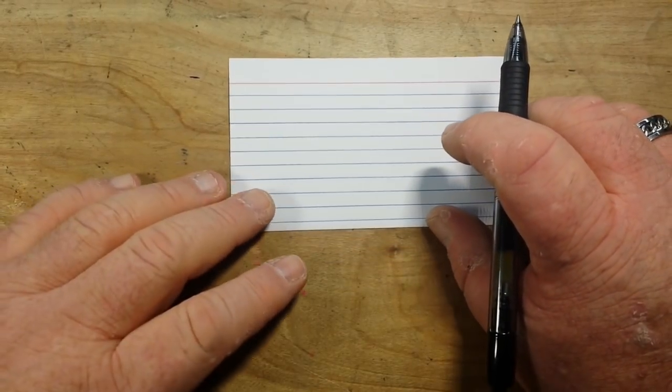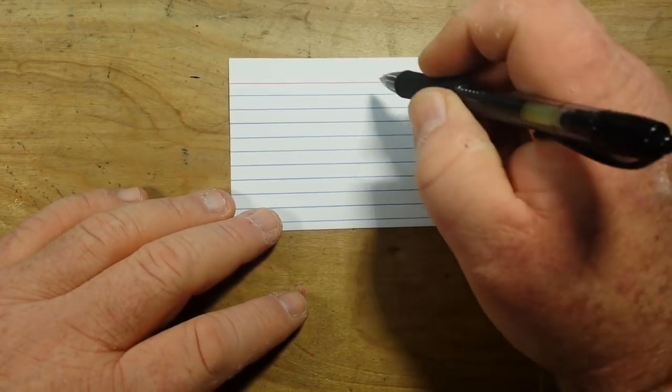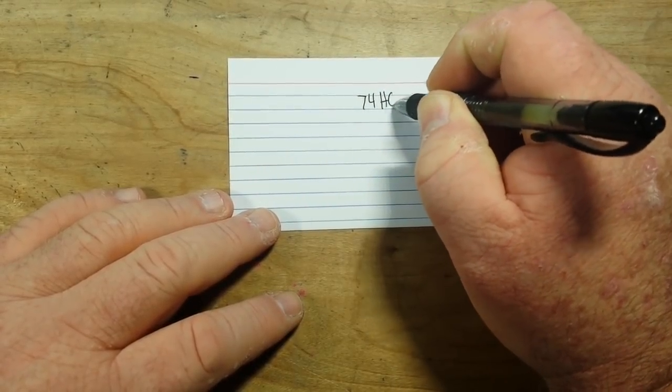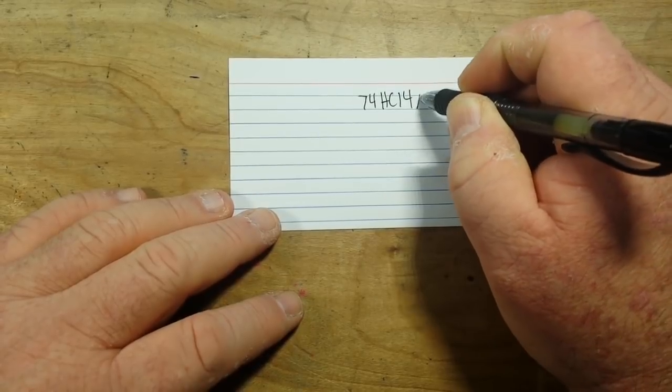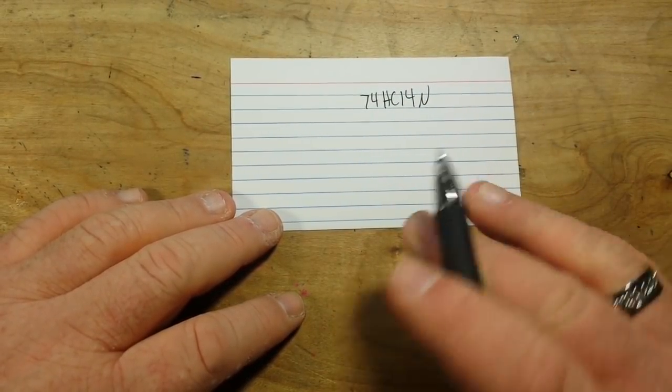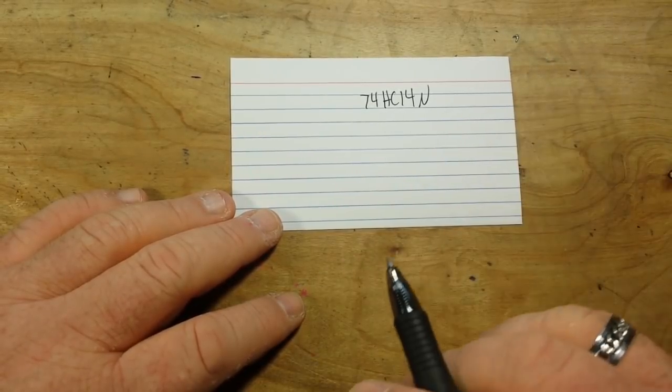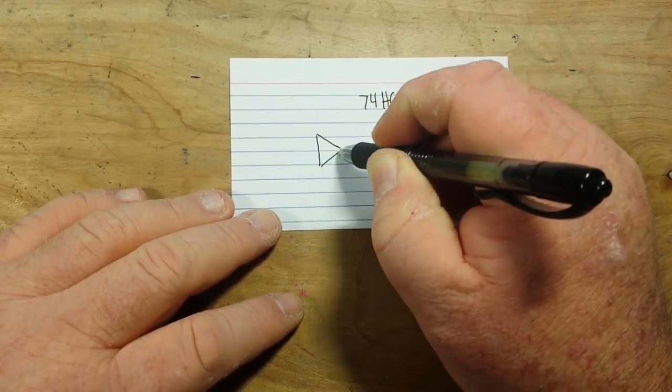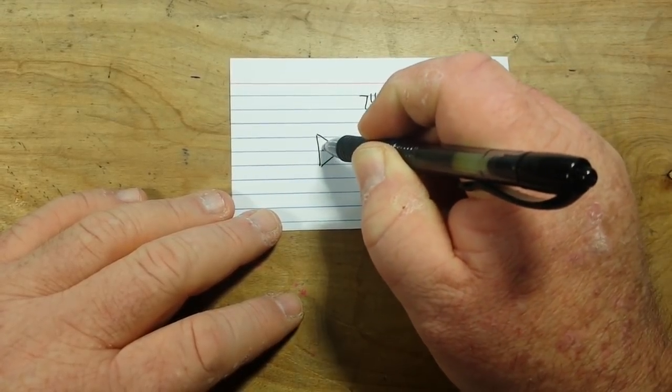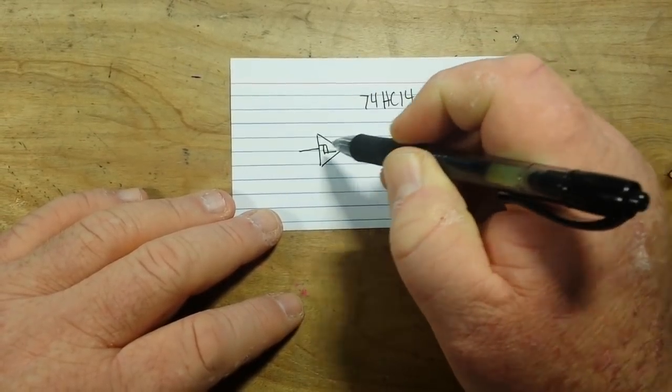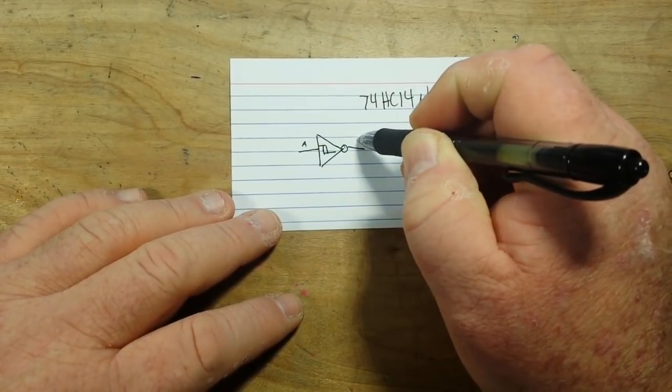So what we can do is we can take a chip. In this case, we're gonna use the 74HC14N. That is a Schmidt Trigger Hex Inverter. That means it just has six Schmidt Trigger Inverters in it. So here's the symbol for your Schmidt Trigger Inverter. We have input, output. They're called A and Y.